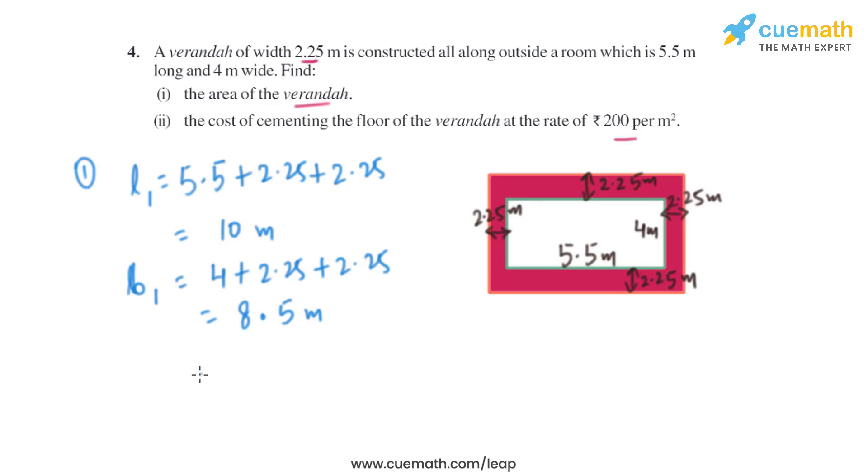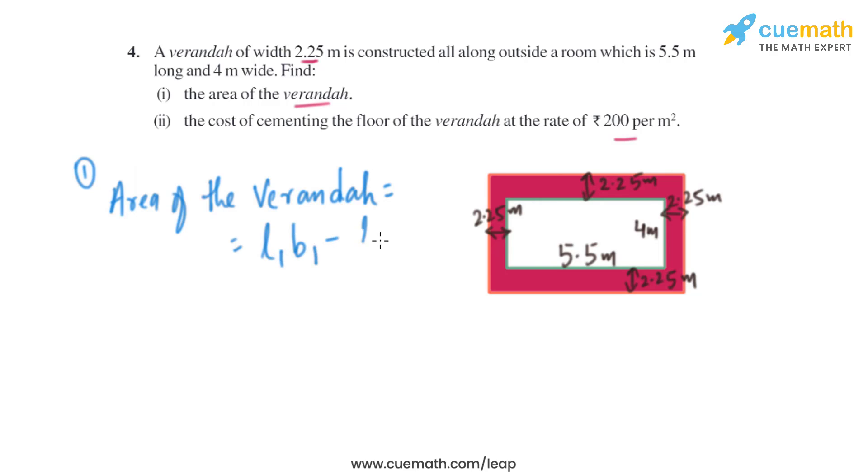Now to find the area of the veranda, it is basically L1 into B1 minus LB. That is, the length and breadth actually given in the question, which is 5.5 meters and 4 meters.